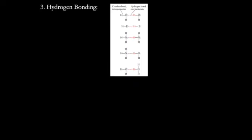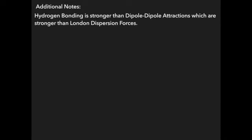Remember, for hydrogen bonding you need fluorine, oxygen, or nitrogen — and those hydrogens need to be bound to an oxygen, fluorine, or nitrogen as well. Hydrogen bonding is going to be stronger than dipole-dipole normally, which is going to be stronger than London dispersion forces. Typically, London dispersion forces are the weakest type of intermolecular attraction, and hydrogen bonding is the strongest.